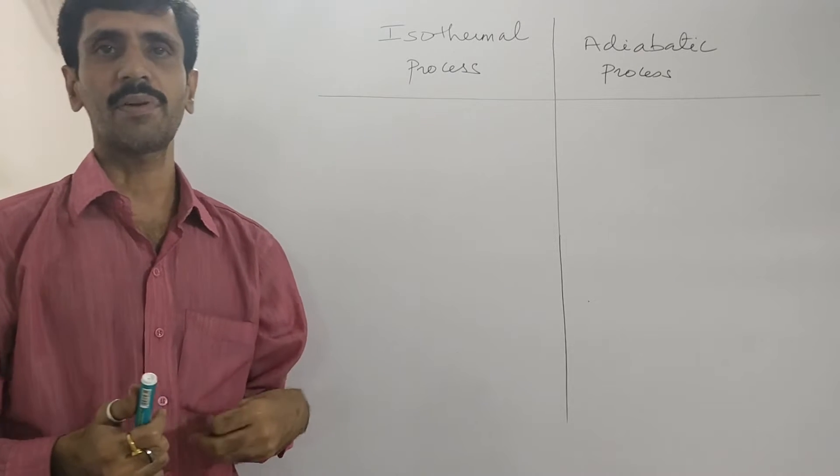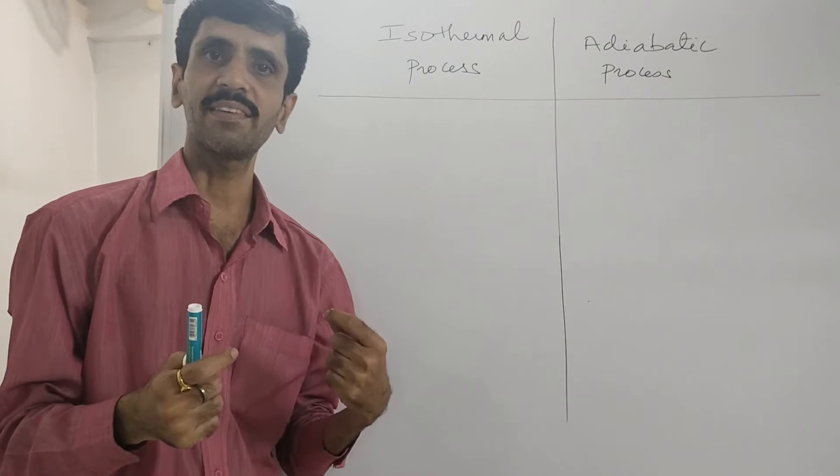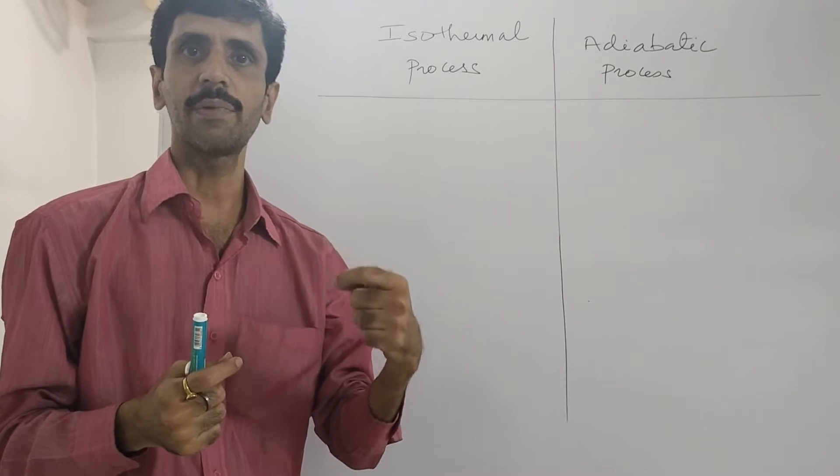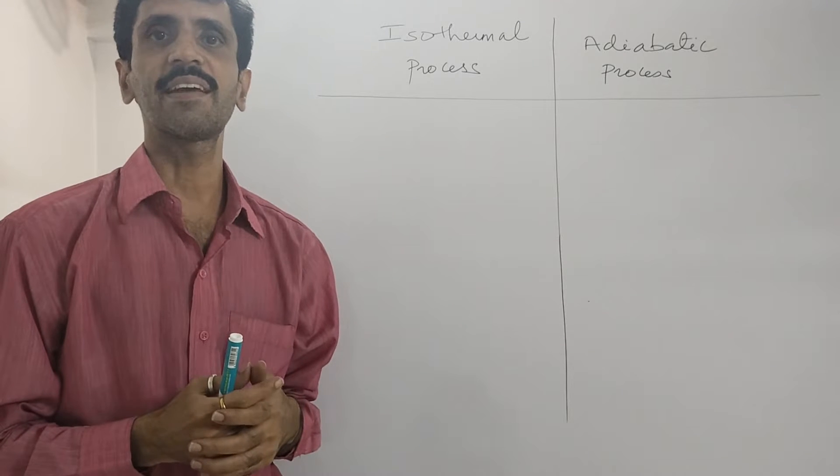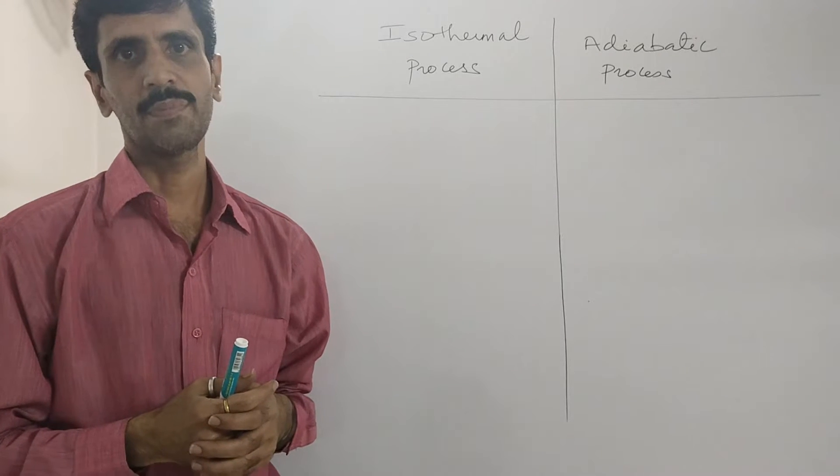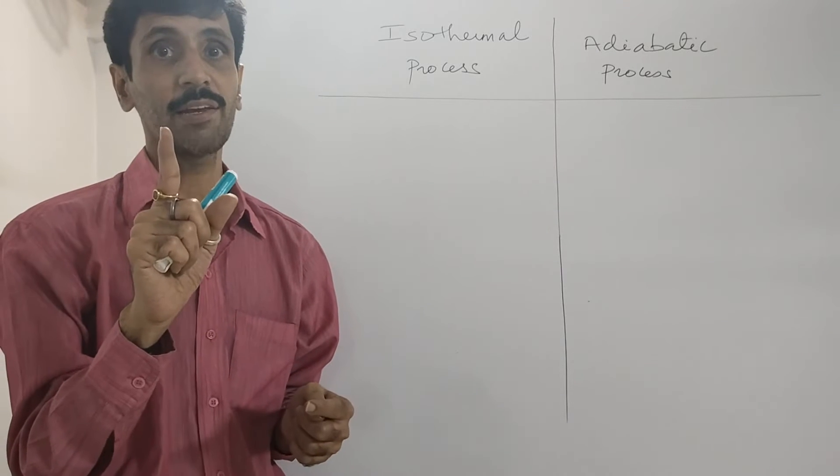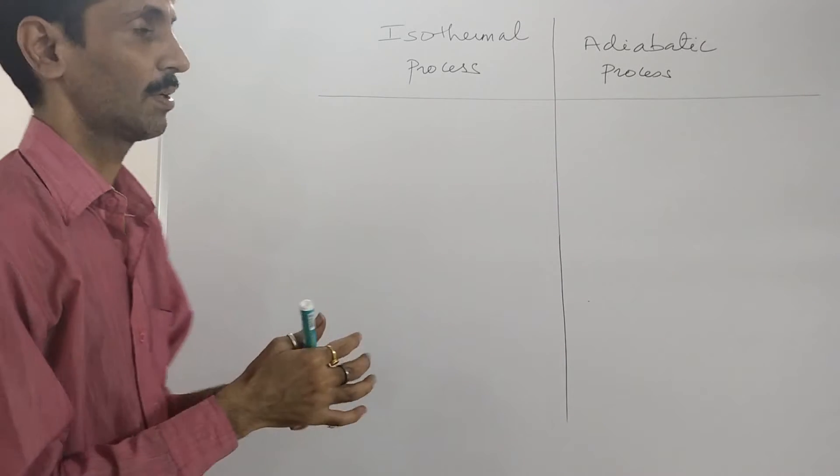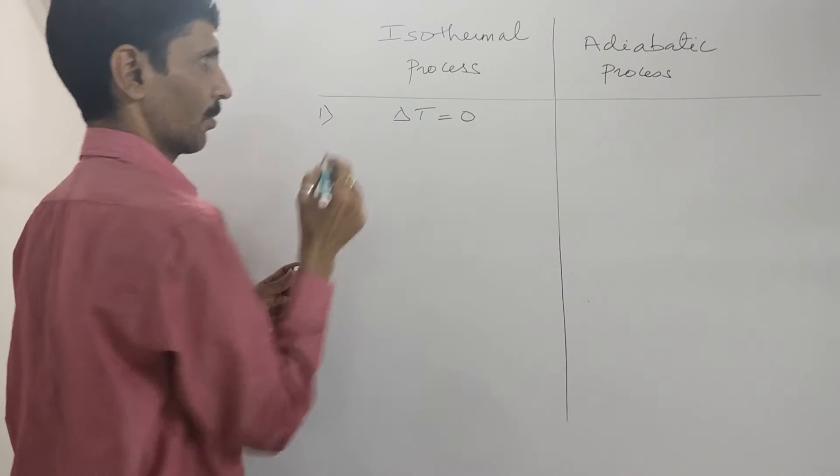When I talk about an isothermal process, you can recall I told you that it's a process in which the temperature remains constant, or we can say the temperature does not change. That is, the change is zero. It's not the temperature value zero. So the first one is delta T is equal to zero.